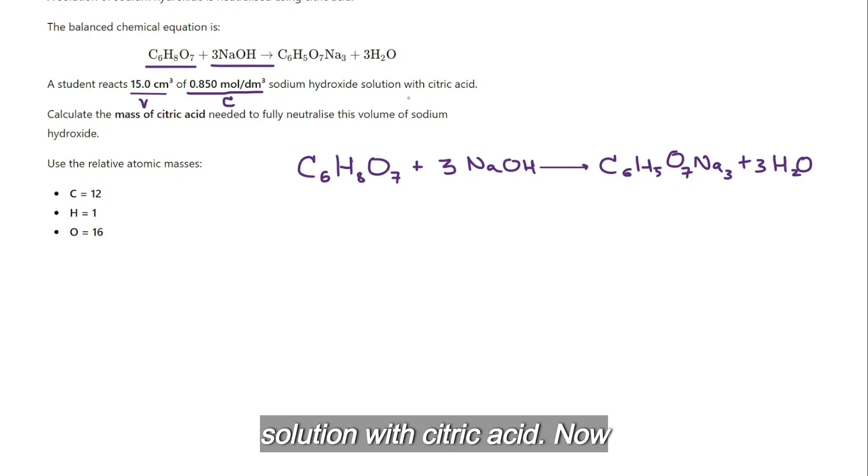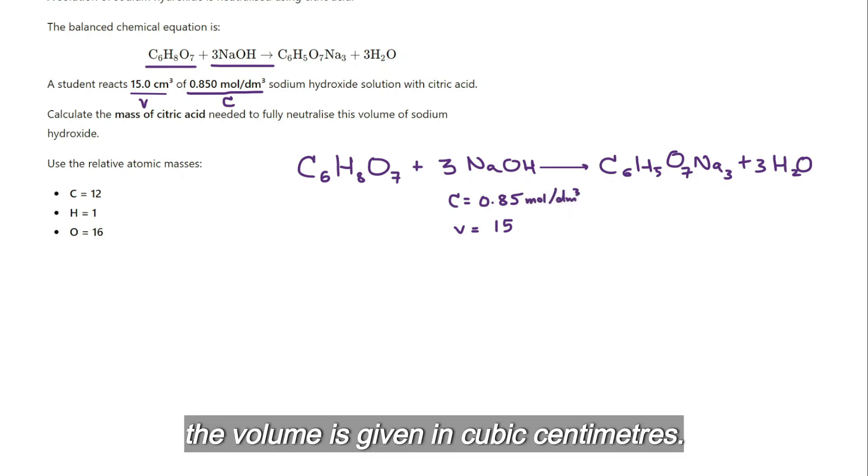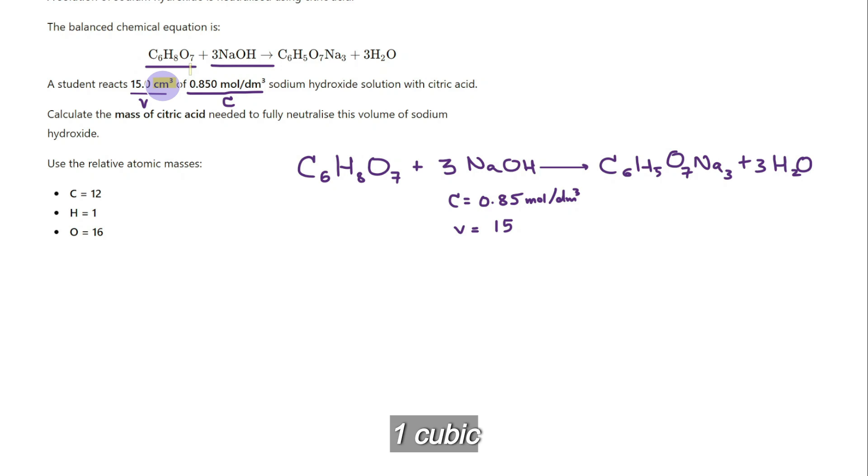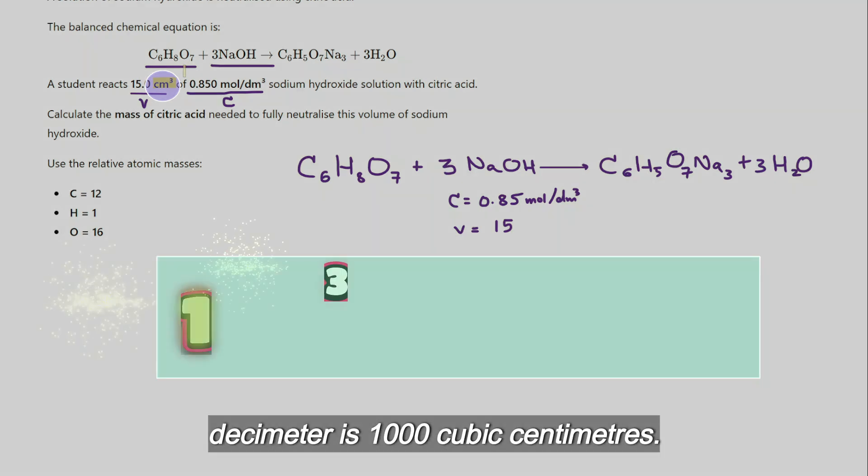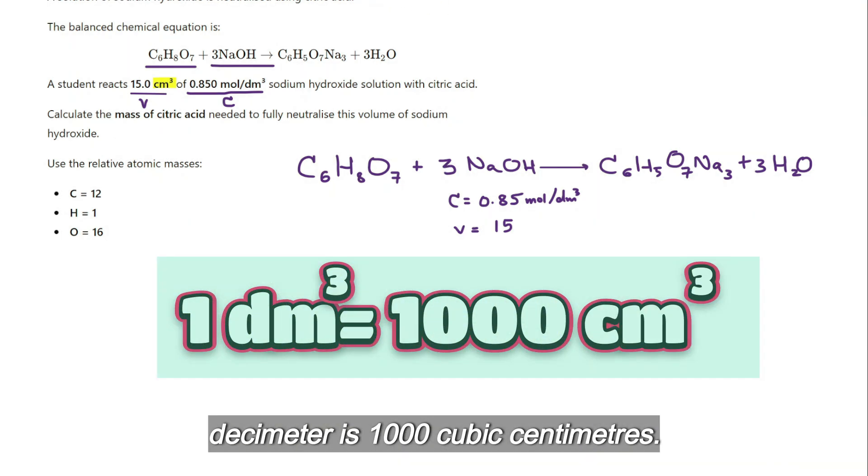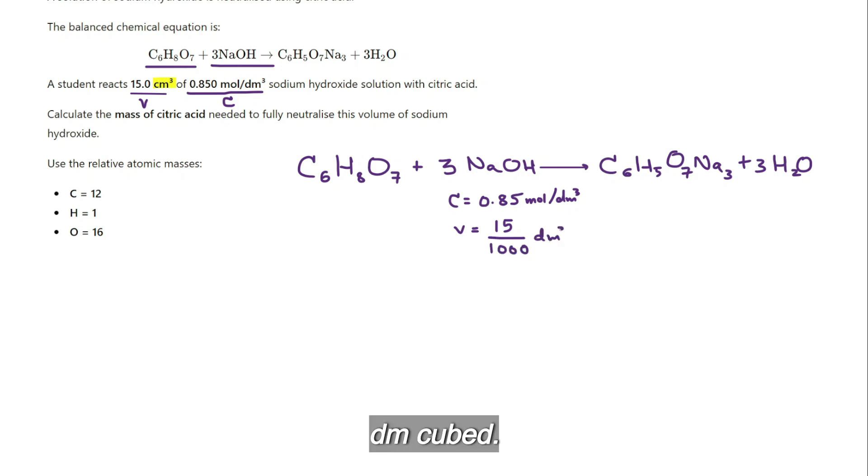Now let's write what we know. The concentration is 0.85, but look, the units here are in moles per cubic decimeter, but the volume is given in cubic centimeters. So we know one cubic decimeter is 1000 cubic centimeters, so you need to divide it by 1000 dm³.